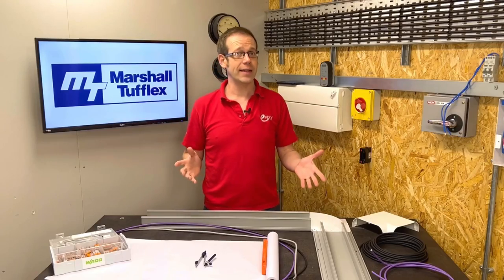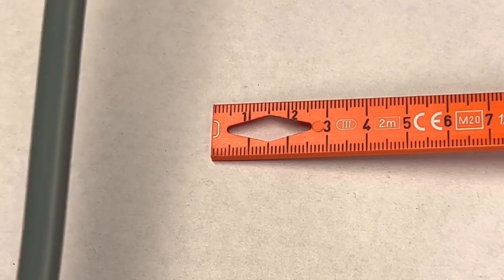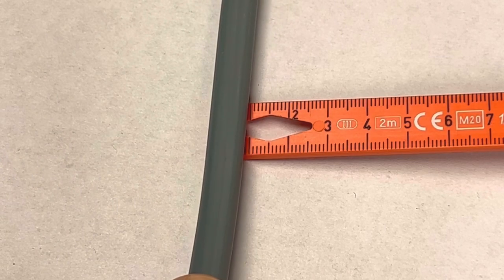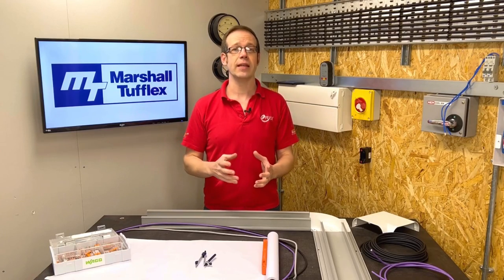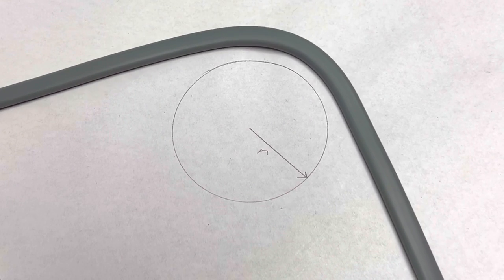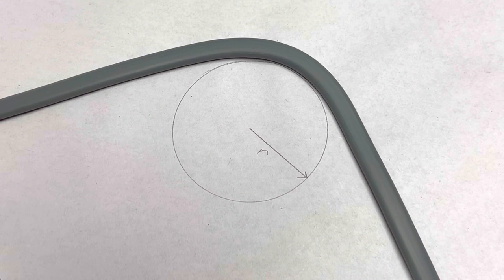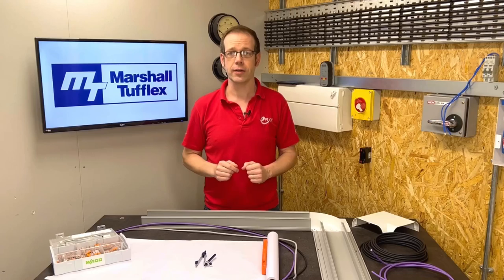Hopefully as electricians we're familiar with the idea of a bending radius. You take the outer diameter of a cable and multiply it by a specific number. The result of this calculation becomes the radius of a circle, and when you take a cable around a corner the bend in that cable mustn't be tighter than the curve of the circle.